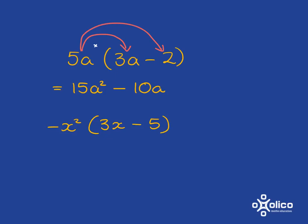Try this one for yourself — pause the video and try it now. You have to remember to multiply with each and everything in the bracket. Negative x squared multiplied by 3x gives you negative 3x cubed. And then negative times negative gives you a positive, so you get positive 5x squared.